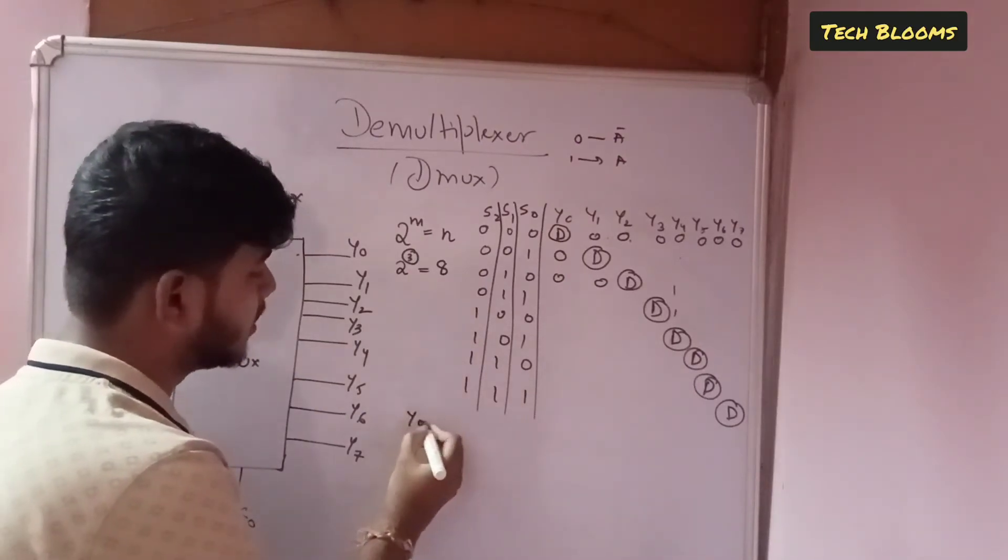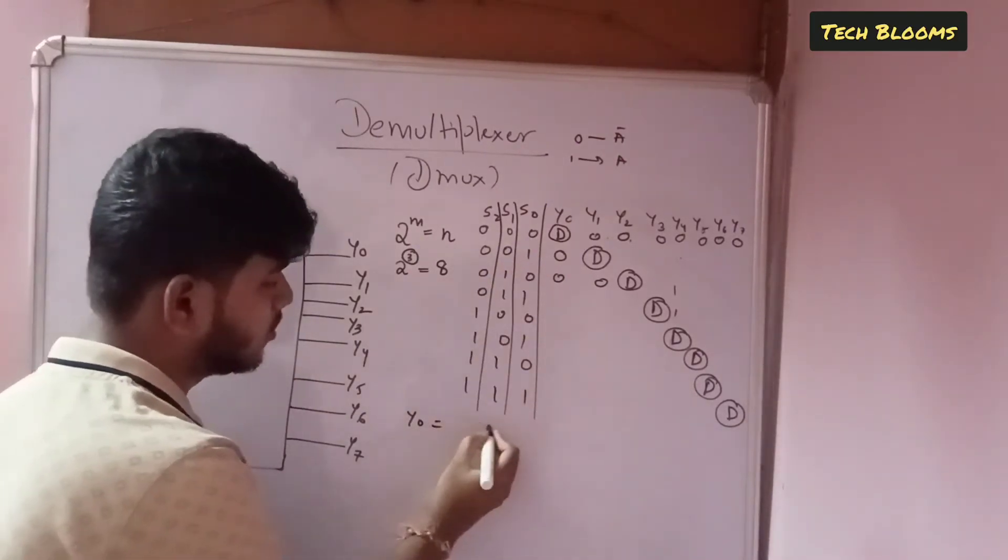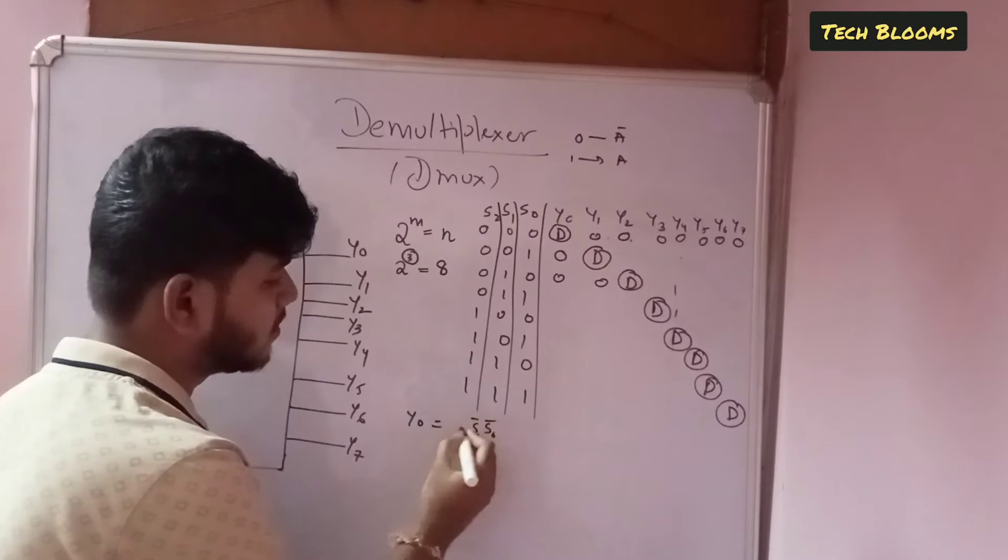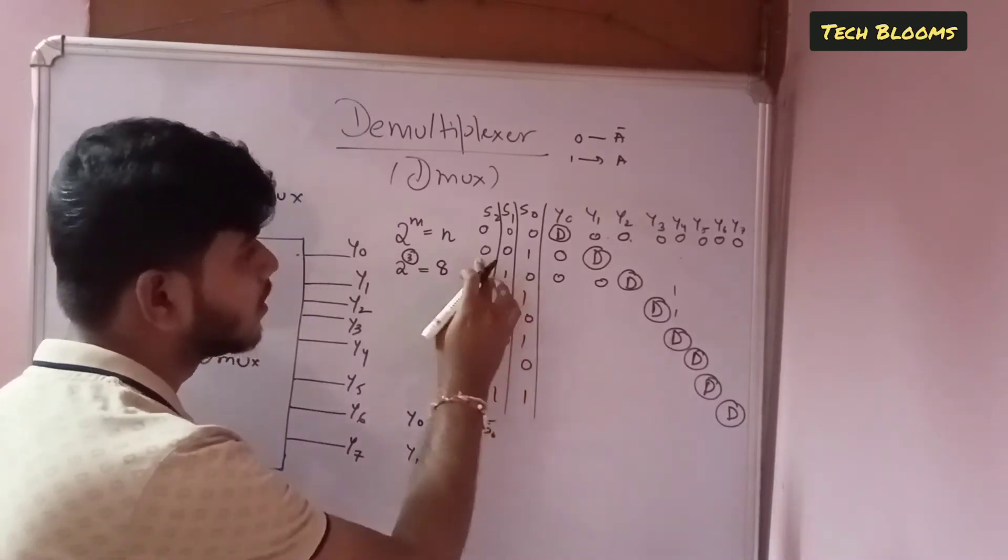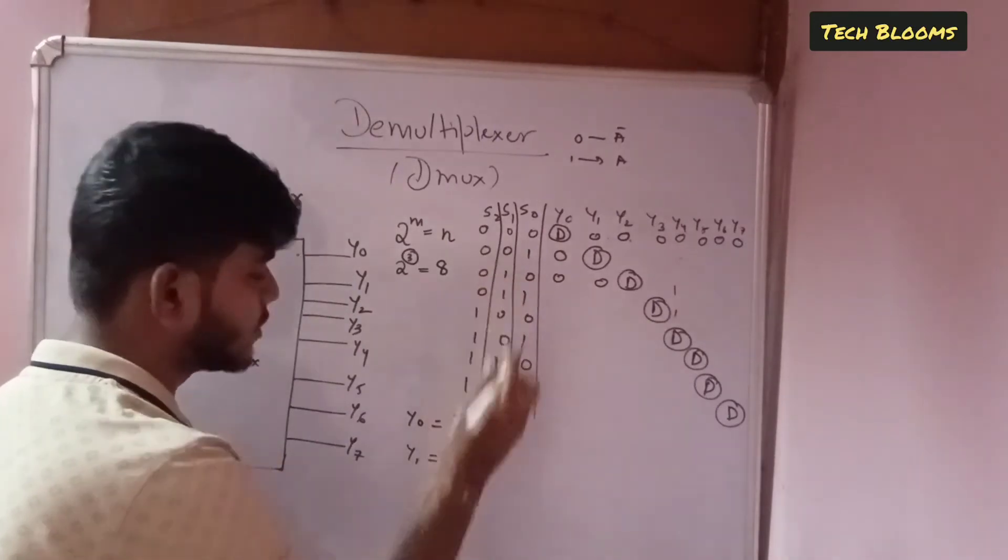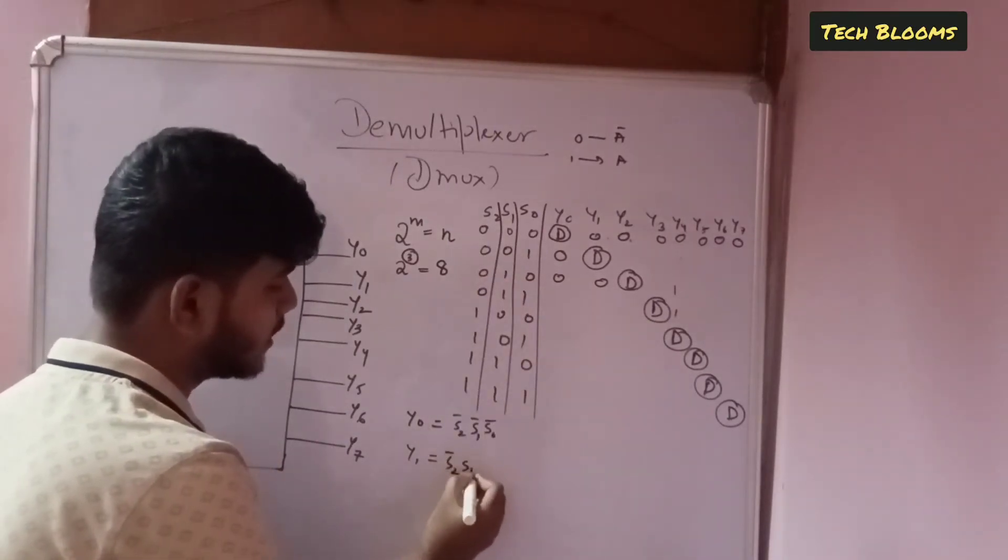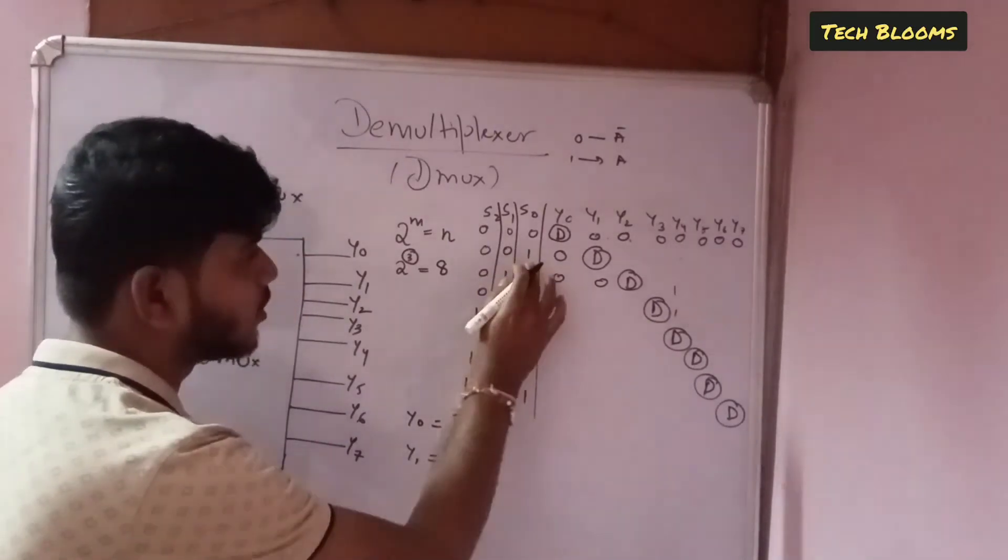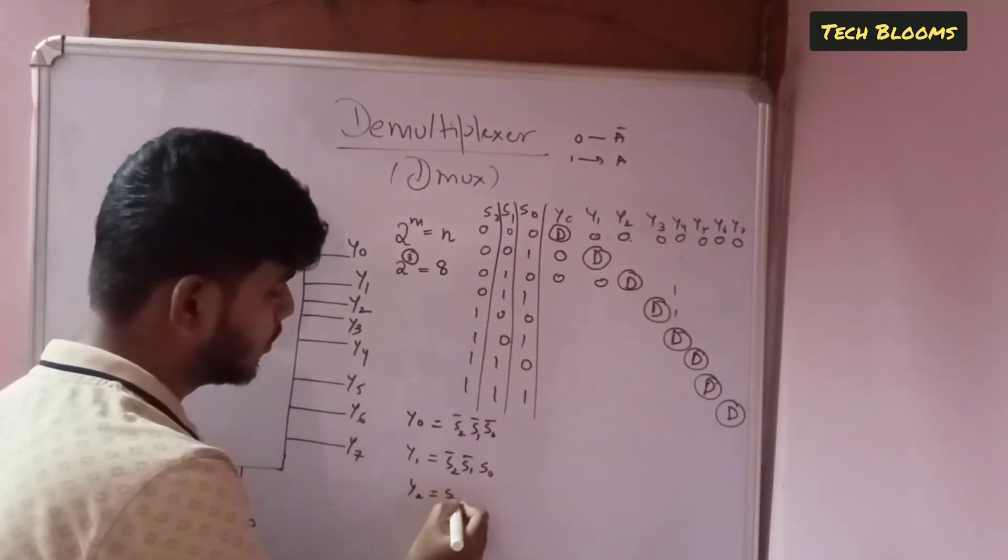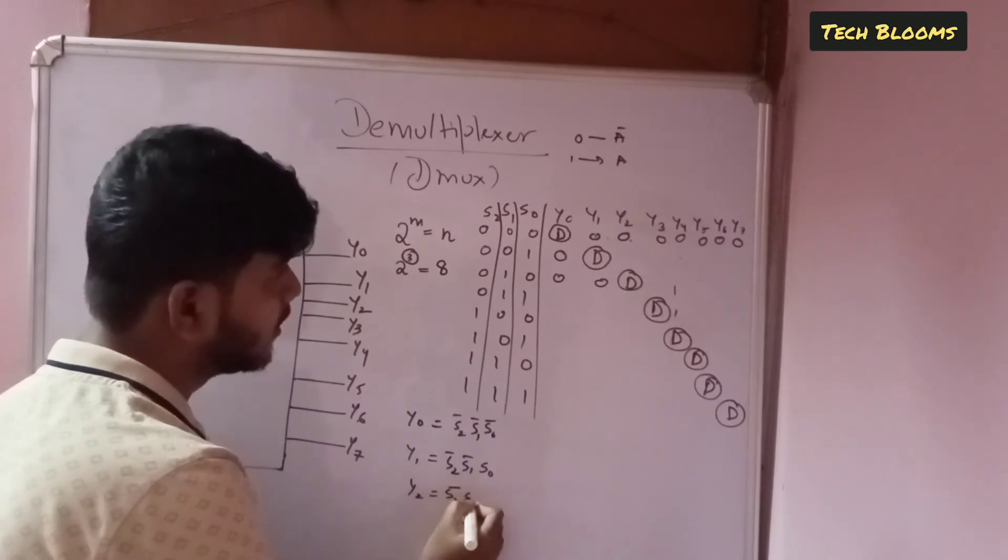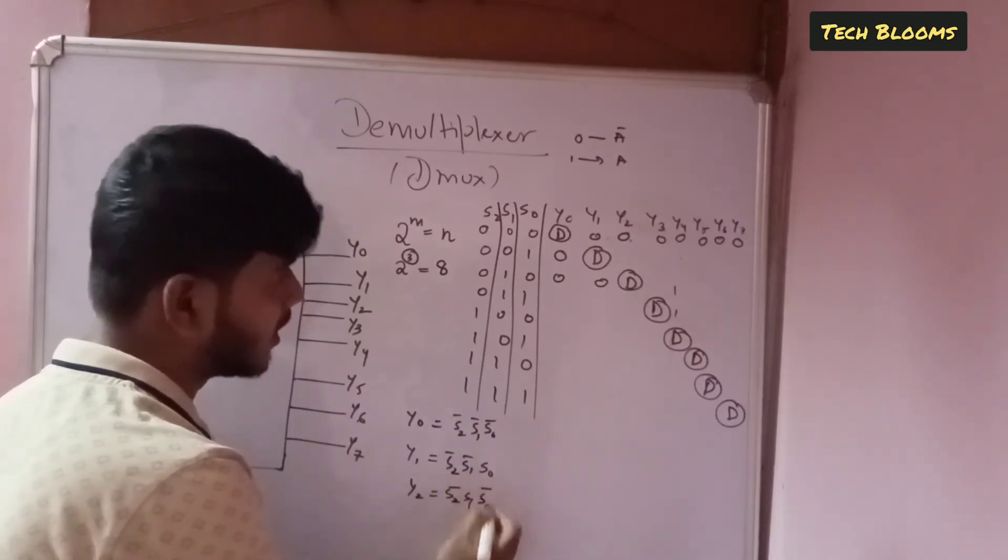So y0 will be nothing but s0 bar s1 bar s2 bar and y1 will be what is y1? It is s2 bar s1 bar s0.